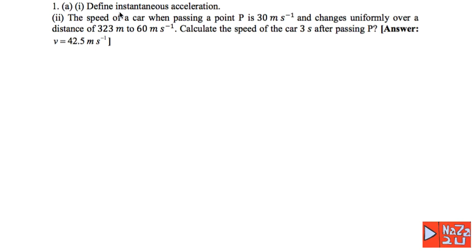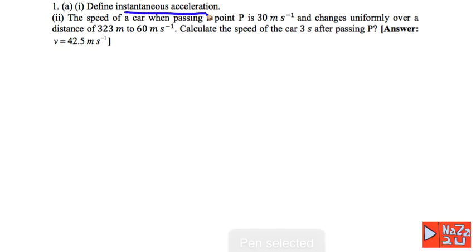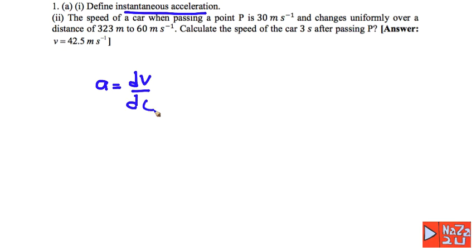Equation number one: define instantaneous acceleration. Instantaneous acceleration is the acceleration at a particular instant of time. You can use the equation: instantaneous acceleration equals dv divided by dt, so the acceleration here is at a certain time t.